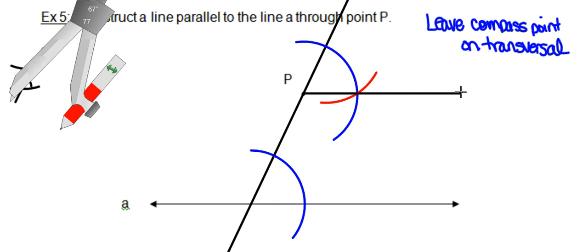Students sometimes worry that the lines don't look parallel, but as long as your construction is correct — your two arcs are the same and the distances between where those arcs intersect the sides of your angles are equal — you'll get full credit. The key rule: always leave the compass point on the transversal, and this construction becomes considerably easier.